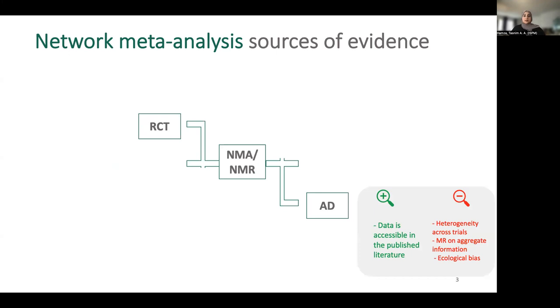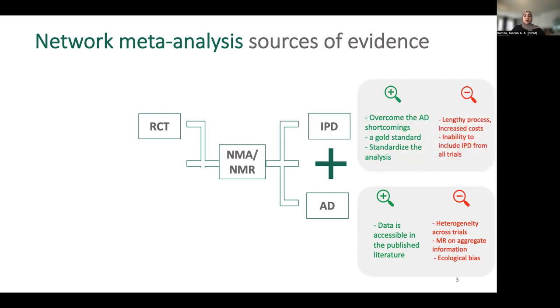Standard network meta-analysis synthesizes aggregate data from randomized clinical trials because it is easily accessible from the published literature. However, heterogeneity may be present across these trials, and we include participant covariates or effect modifiers as aggregate information to explain some of this heterogeneity. Including covariates could, however, induce aggregation bias. So ideally, we would like to include the covariates on the individual level from every study. But more typically, we only have IPD from a subset of studies and then aggregated data from the rest.